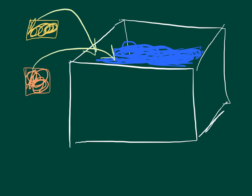So on this one, I'm going to do like I did in the last question. I've got a Q1 that I'm going to call aluminum — this is the aluminum calorimeter. I've got a Q2 that I'm going to call water. I've got a Q3 that I'm going to call copper. And I've got a Q4 that I'm just going to call question mark — I don't know what it is. But what I do know is that Q1 plus Q2 plus Q3 plus Q4 equals zero.